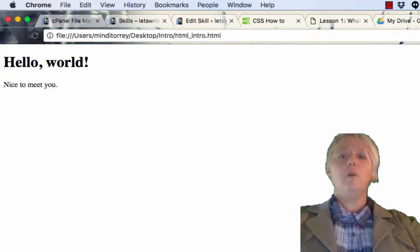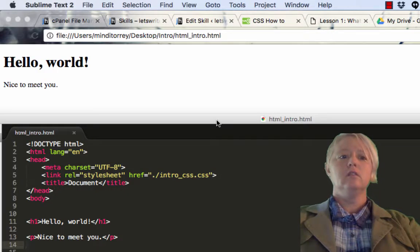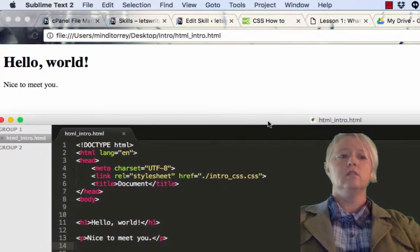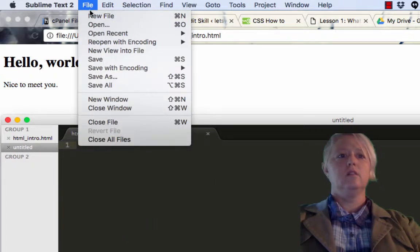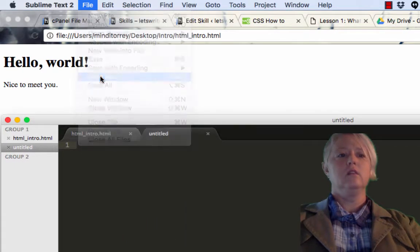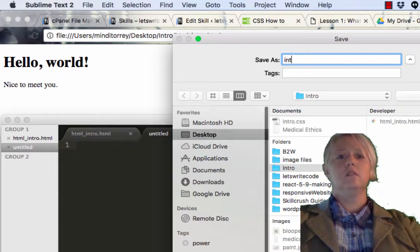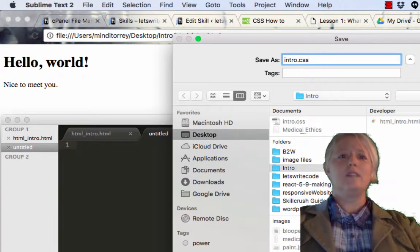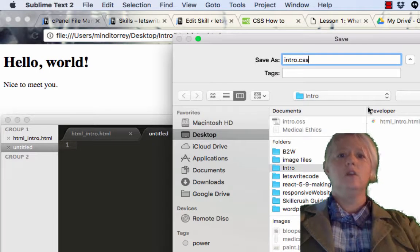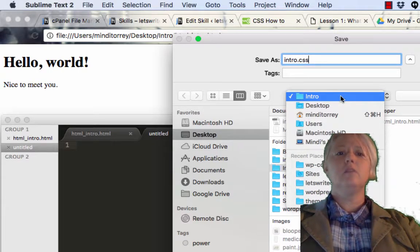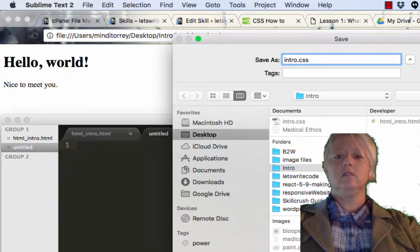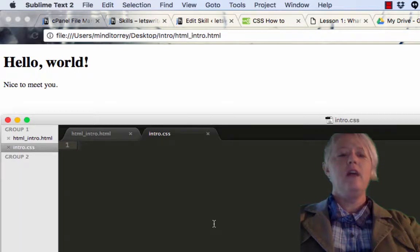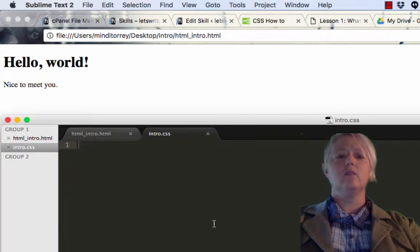Well, all we would have to do is add a new file saved as a CSS file. So, .css is the extension. We would want to save that in the same place, in the same directory or folder that our HTML file is in. Save. And now, we're set. We can write some CSS code.